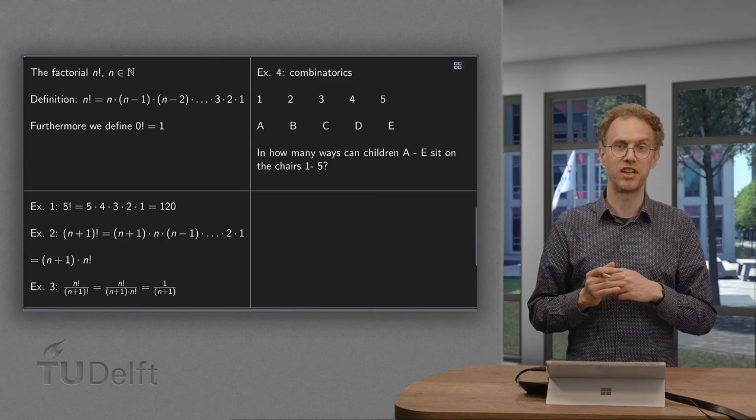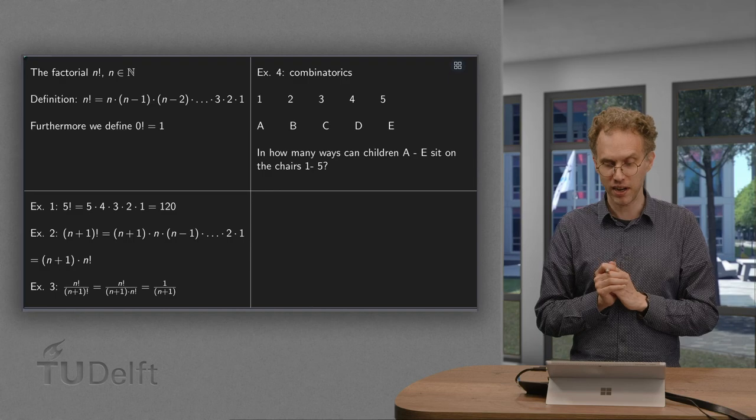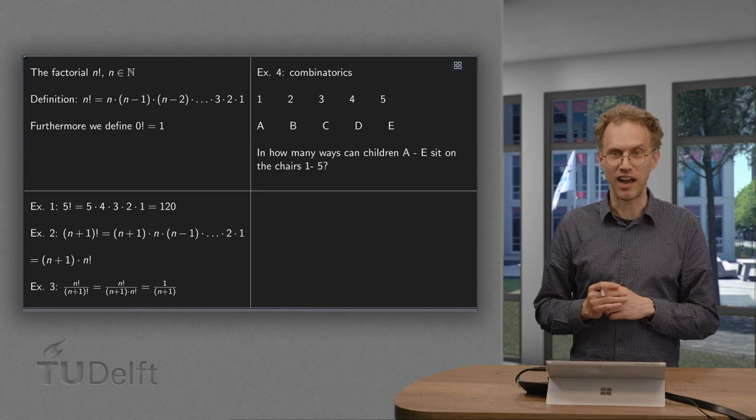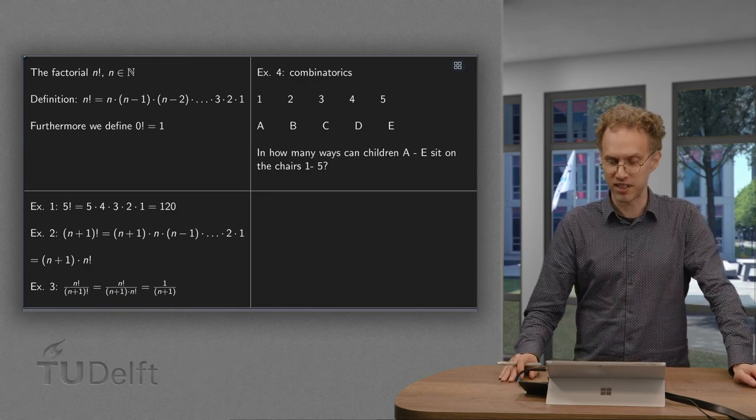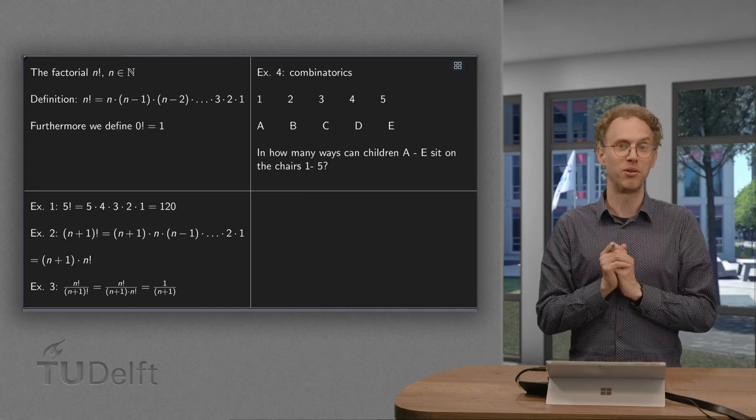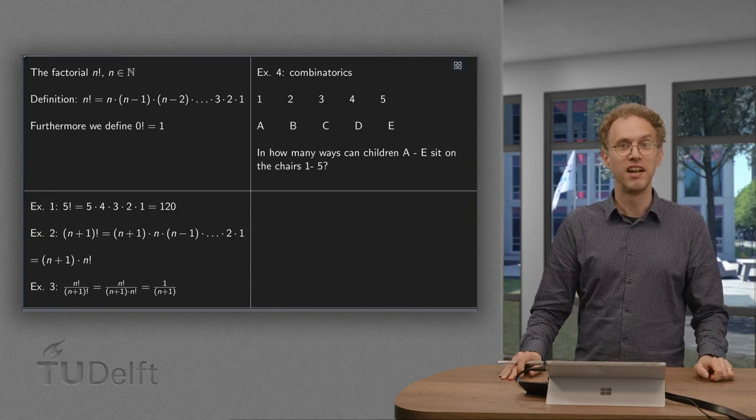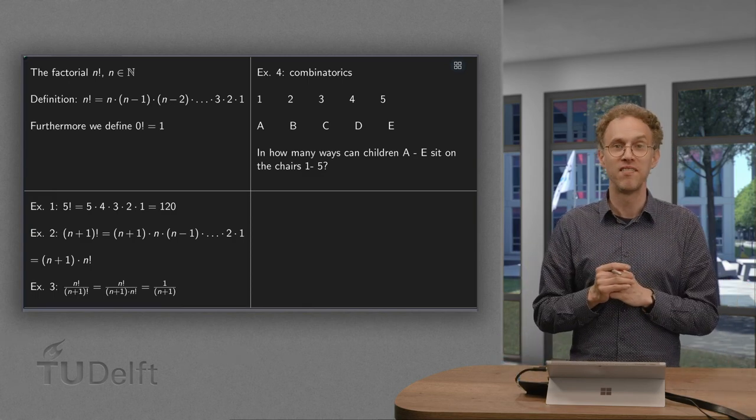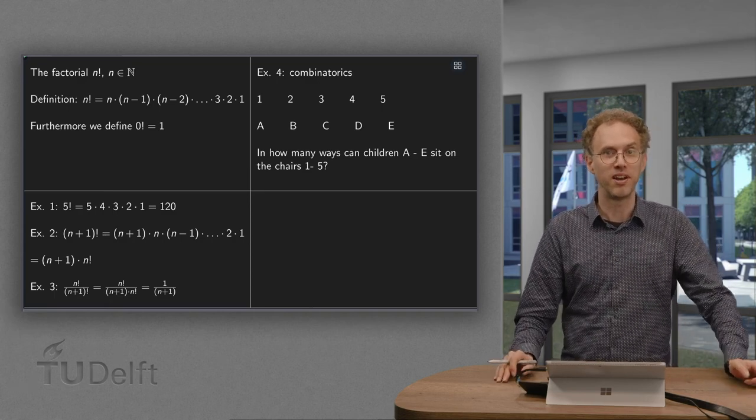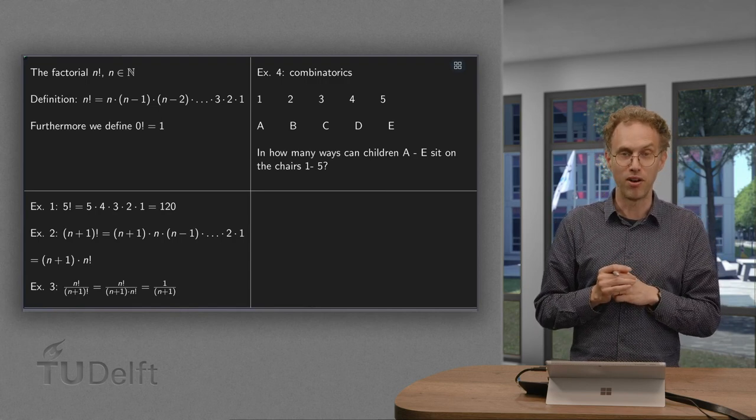Now do some combinatorics as our final example. So for example we have this example over here where we have 5 chairs, 1, 2, 3, 4, 5, and we have 5 ideal children: Anna, Bart, Chris, Donald and Emma. And ideal in the sense that they all are going to sit on one chair, not all 5 at the same chair, and they don't have a preferred chair and they also don't mind sitting to whoever they are next to. So ideal children in a way.